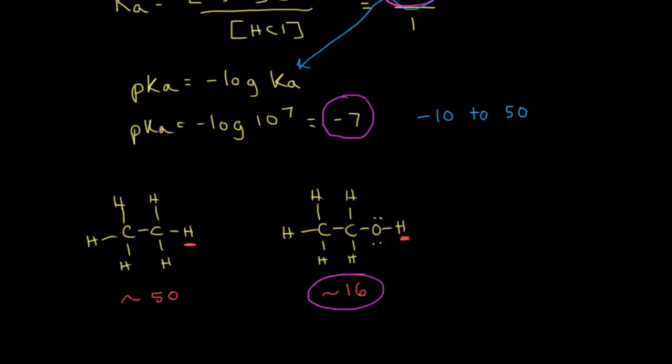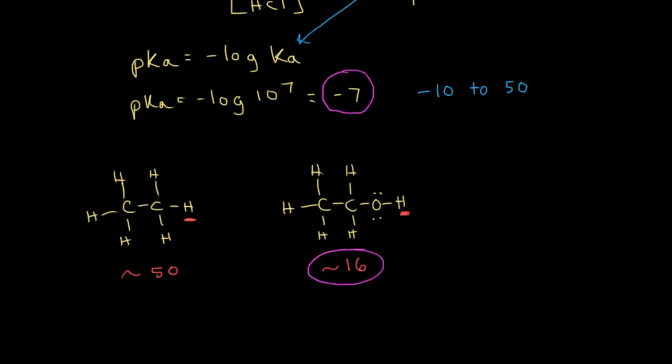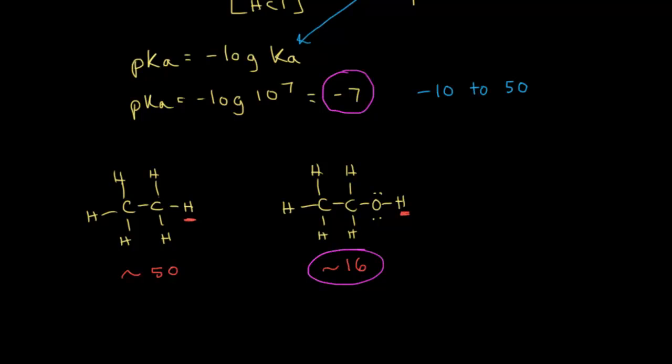In terms of how much more acidic ethanol is than ethane — it might be tempting just to subtract those numbers: 50 minus 16 gives you 34. But ethanol isn't 34 times more acidic; it's 34 orders of magnitude more acidic, meaning 10 to the 34th times more acidic, which is an extremely large number. For all practical purposes, ethanol is acidic but ethane is not acidic at all. And HCl is far more acidic than ethanol — HCl is a strong acid, ethanol is not, and ethane is not really an acid at all. These pKa values are extremely important and will come up several times in an organic chemistry course.